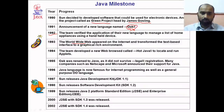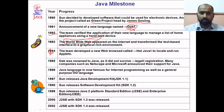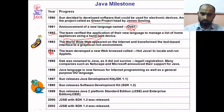In 1994, the team developed a new web browser called Hot Java to locate and run Java applets. Sun Microsystems developed their own browser that year. In 1995, Oak was renamed to Java as it did not survive the legal registration process.